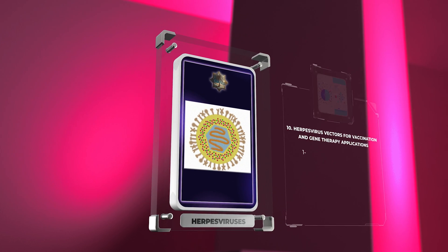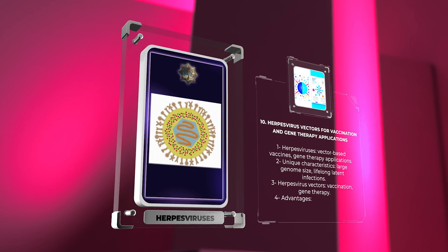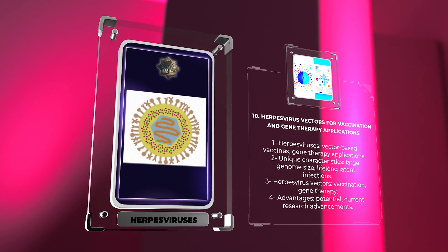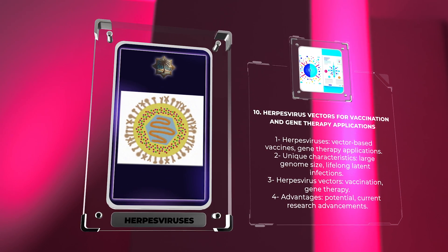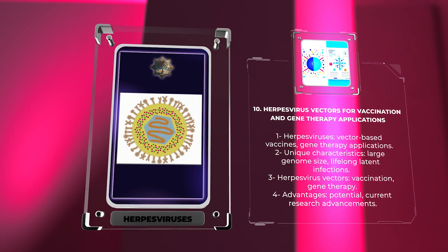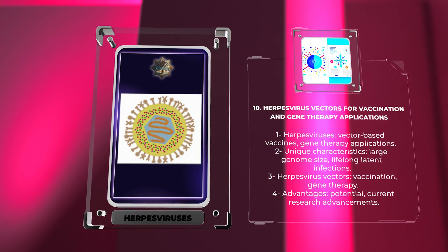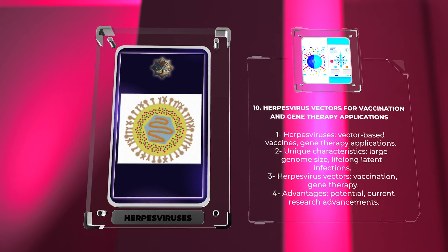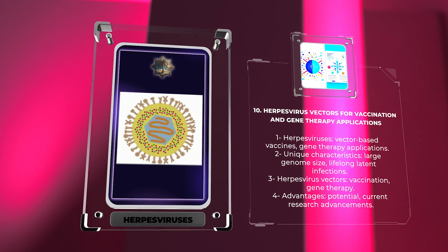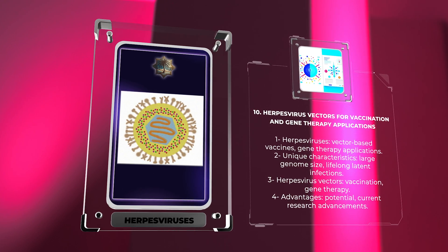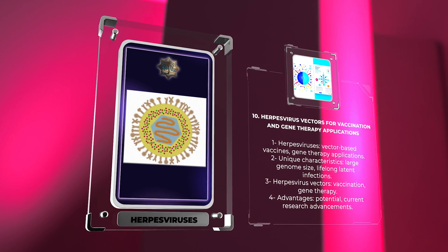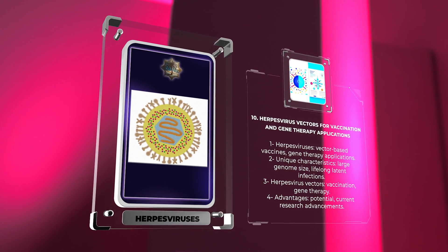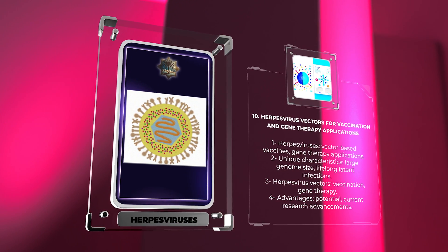Herpes viruses provide a valuable platform for vector-based vaccines and gene therapy applications. Their unique characteristics, including large genome size and ability to establish lifelong latent infections, make them attractive candidates for developing innovative approaches in the field of genetic medicine. In this section, we will explore the potential of herpes virus vectors for vaccination and gene therapy applications, highlighting their advantages and current research advancements.